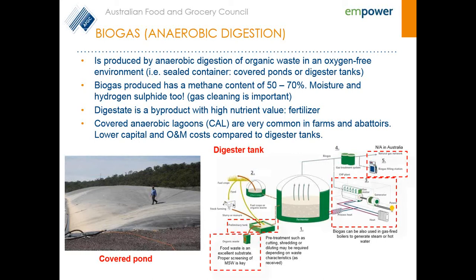There are a number of studies being conducted around this, showing that combining manure or paunch contents from animals with wood waste or crop waste can significantly improve yield. The biogas can be used in a gas engine to generate electricity, fed directly into a gas boiler to generate steam or hot water, or even used in more sophisticated solutions such as grid injection — a more advanced solution we're starting to see in Europe but not yet available in Australia.